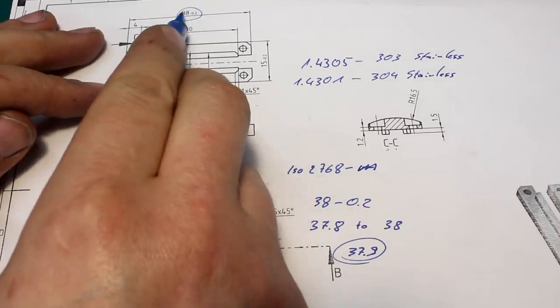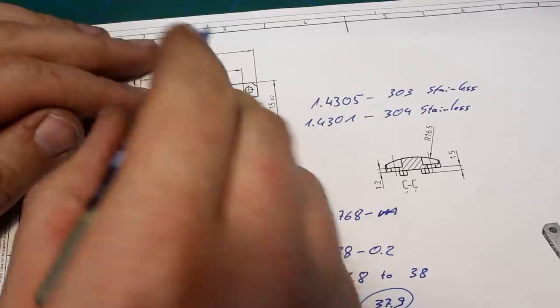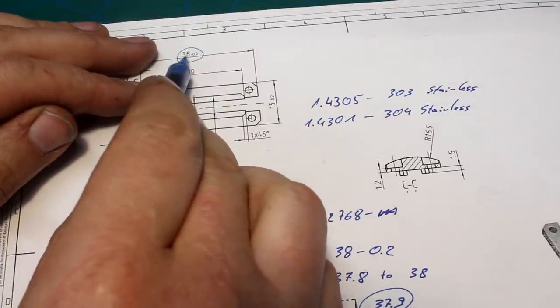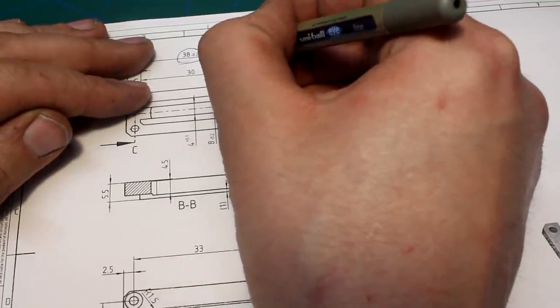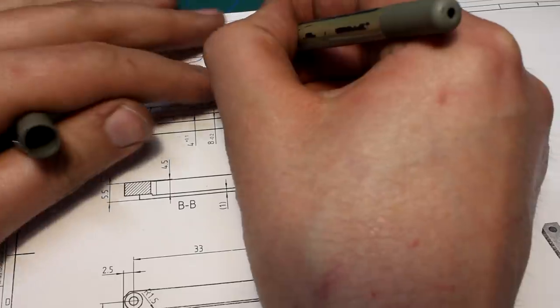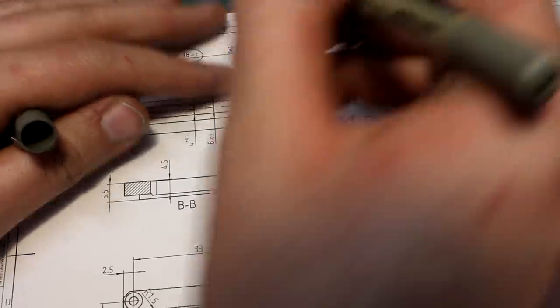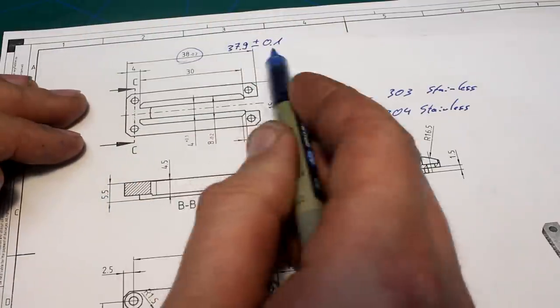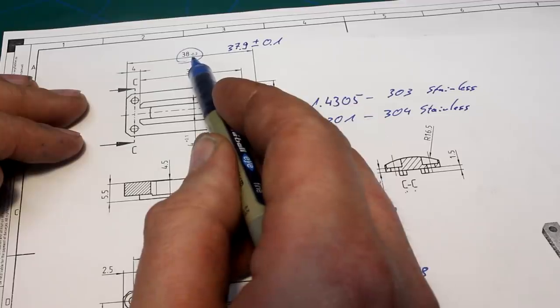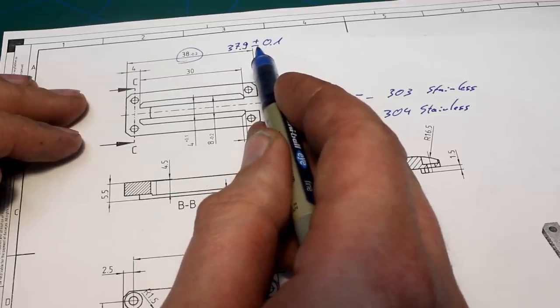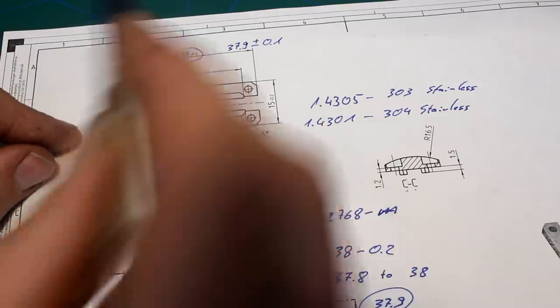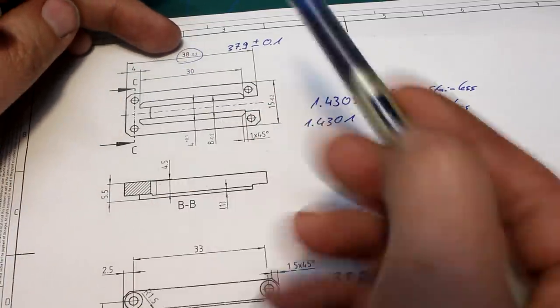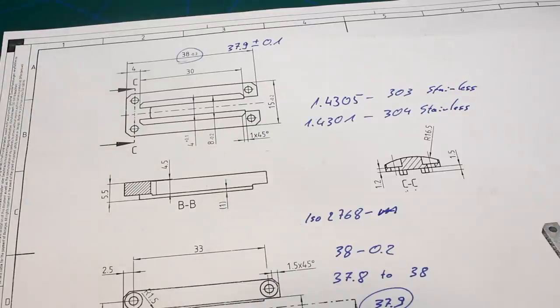If you write 37.9 plus minus 0.1 instead of 38 minus 0.2, both mean the same. But this is easier for the machine shop. And this is easier for understanding the assembly in conjunction with the other tolerances. So it depends on what you want to do.